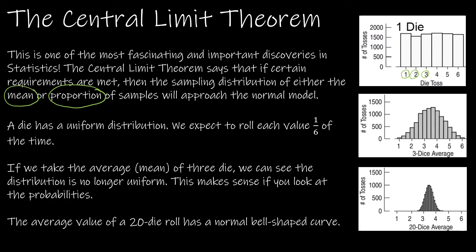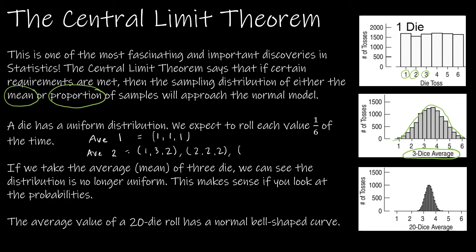Now, if instead I roll 3 dice and then find the average of those 3 dice, this is no longer a uniform distribution. It makes sense if we think about the probabilities. If my average was 1, the only way to get that is to roll a 1, and a 1, and a 1 — so a 1 on all 3 dice. But to roll an average of 2, I could have a 1, a 3, and a 2; or a 2, a 2, and a 2; or a 1, a 1, and a 4; etc. So there are a lot of different ways to get an average of 2.